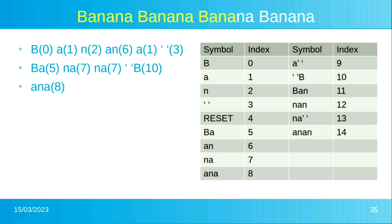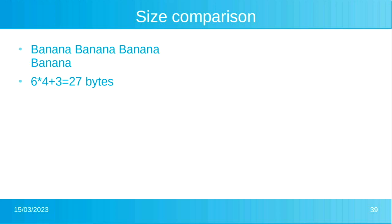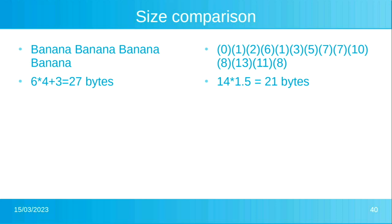We start encoding the final bananas and outputting symbols that are now three characters in length. We finish up the input. How does that compare with our original data? We started with four six-byte words and three spaces, so 27 bytes. In the original LZW algorithm we have a 12-bit, 4096-entry symbol table, so each symbol is a 12-bit number. We multiply by 1.5 to get 21 bytes — we've still managed to get some compression even in this relatively short example.